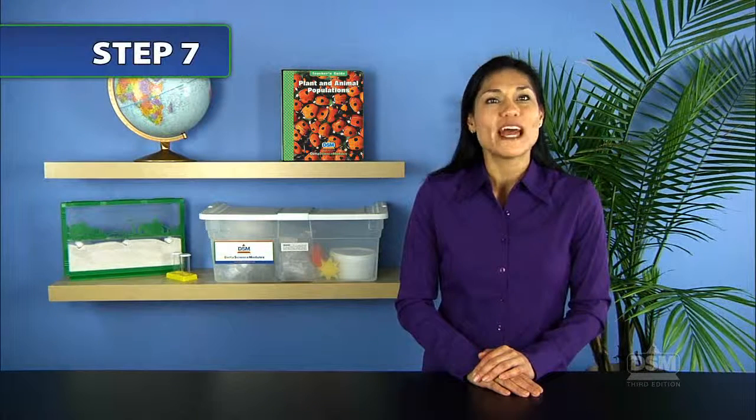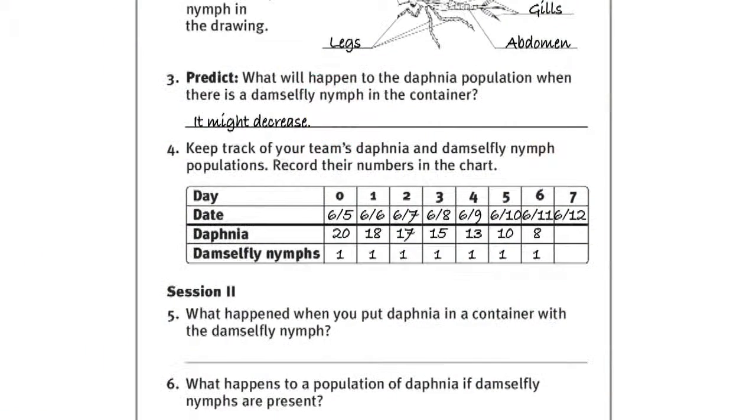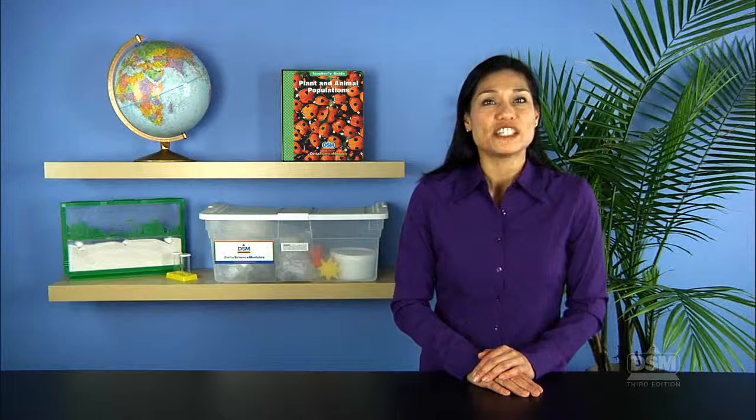Collect the materials and return them to the kit. Collect the activity sheets for use in the continuing observation sessions and Session 2. To conclude Session 1, have teams retrieve their labeled containers and examine the contents every day for about a week. Tell students to count the animals just as they did in Activity 9, then record the population data in the chart on the activity sheet. After each observation session, have students clean and replace the kit materials and hand in their activity sheets.